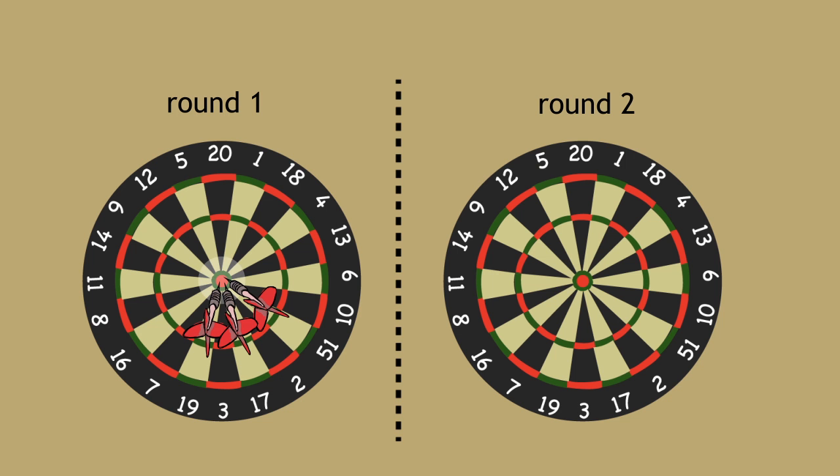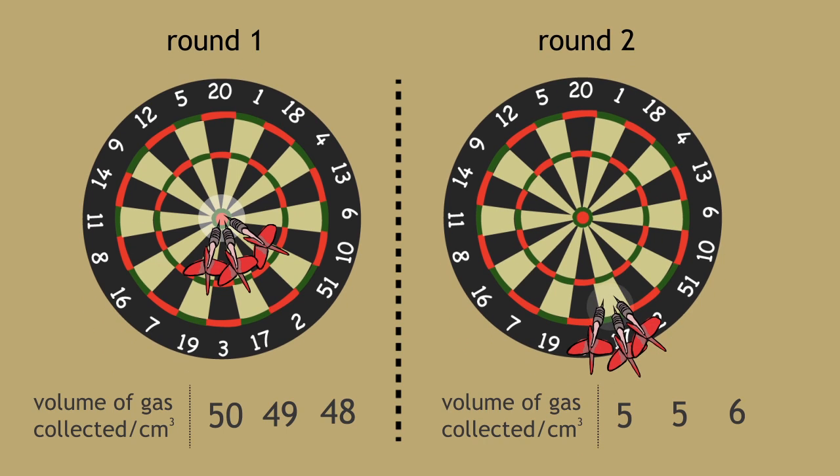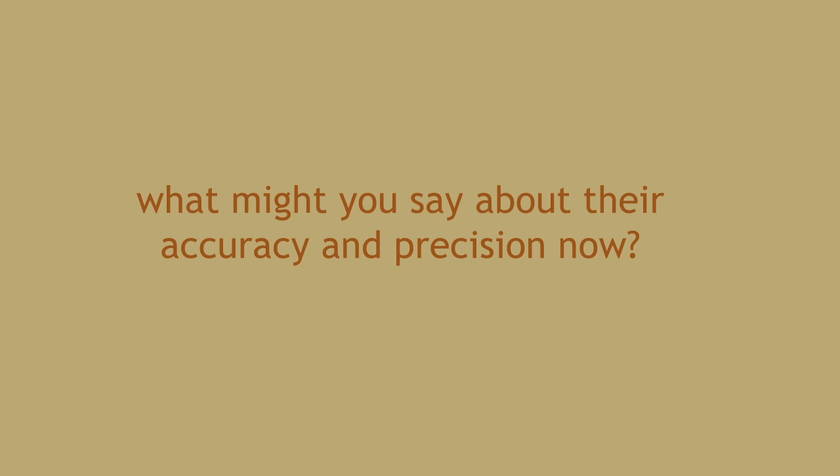Imagine in the second round your three darts hit the dartboard differently, and your volumes are also different to those measured in round one. What might you say about their accuracy and precision now? Pause, think and continue when ready.